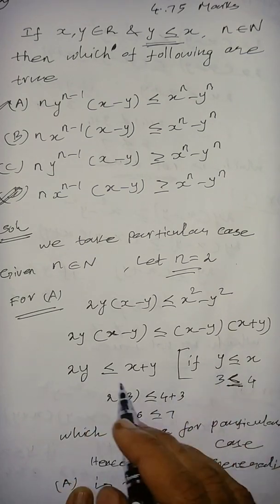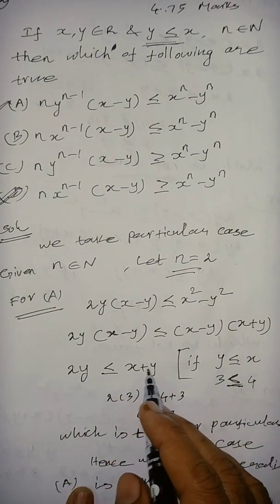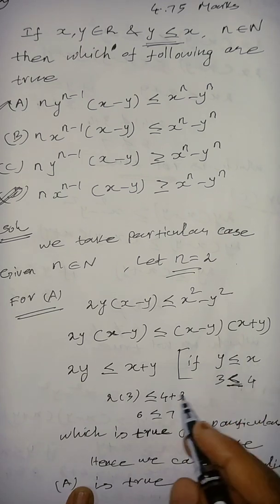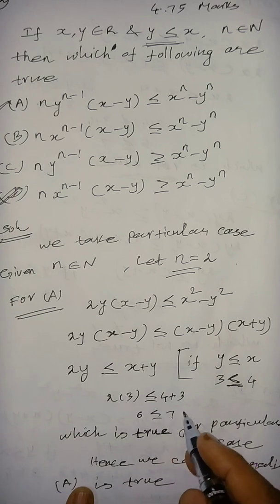So, what is the y value? 3. So, 2 into 3, 6, then, x plus y, then, x value is 4, y value 3, x plus y, that is 7. So, 6 less than or equal to 7.